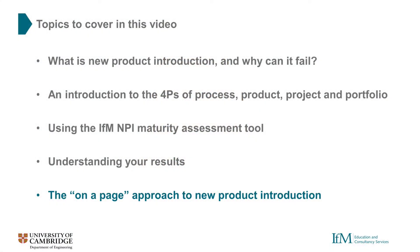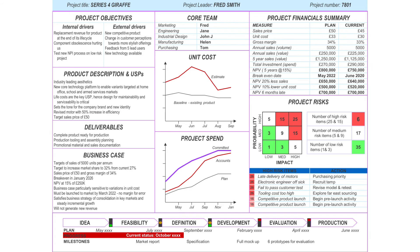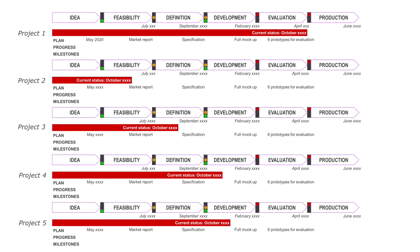One tested and proven way of doing this is through the on-a-page approach developed here at the IFM - a practical way of making sure everyone in your team is on the same page. By organising critical information in the same place in an ordered manner, we can easily track project risks, milestones, and costings, whilst also reminding teams of the original project objectives and business case. Turning to an example portfolio on a page, here we can see a quick and simple overview of our entire project portfolio. This can help us to head off problems such as projects overlapping and competing for priorities, product launches bunching together and causing operational issues, or an inconsistent flow of projects from ideation to delivery.